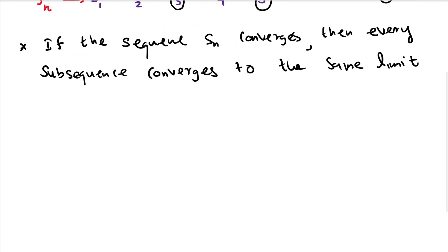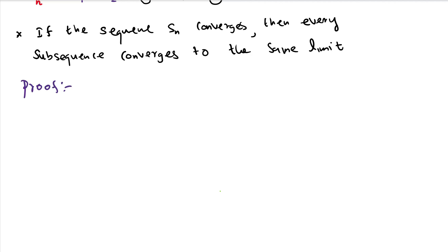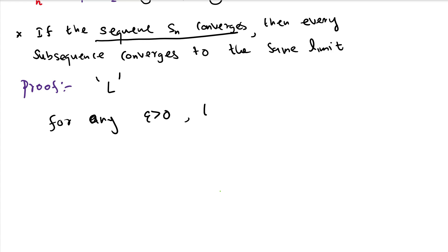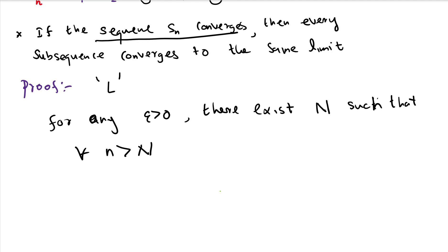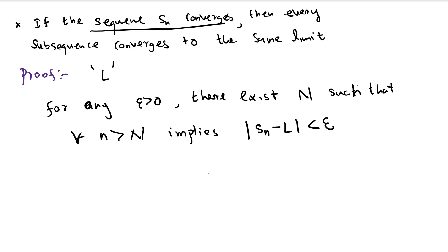Now let's go ahead and prove the theorem. We want to prove that if a sequence S_n is convergent, then every subsequence of that convergent sequence converges to the same limit. We know our main sequence is convergent, so let's use the definition of a convergent sequence. Say the limit of the main sequence is L. Then for any epsilon greater than 0, there exists a position uppercase N such that for all n greater than N, the bound |S_n − L| < epsilon holds. Now let's understand this pictorially.